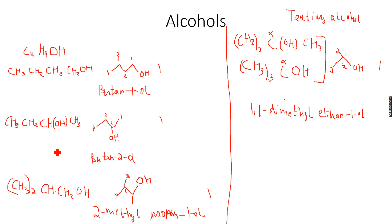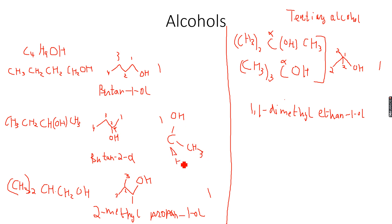Let's look at butan-2-ol. Again, I do not see any carbon-carbon double bond, so there cannot be any geometric isomers. But I can see one chiral center, which is the second carbon atom — let's mark it with a star. This is a chiral center because it is attached to four different groups: an OH group, a CH3 group, a hydrogen atom, and a CH2CH3 group. So this carbon atom is attached to four different groups, making it a chiral center, and hence it will show optical isomerism — it will exist as non-superimposable mirror images.